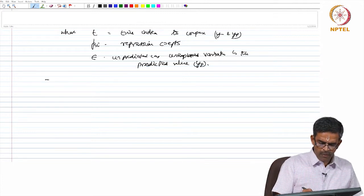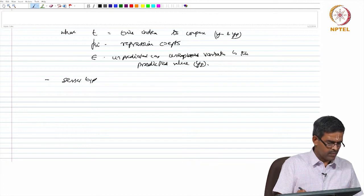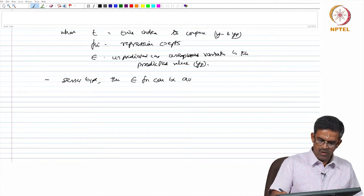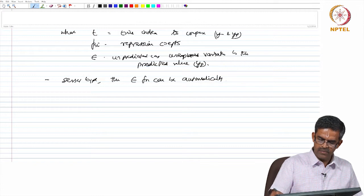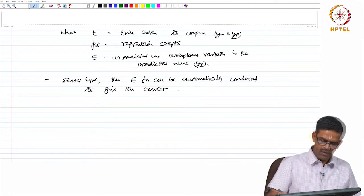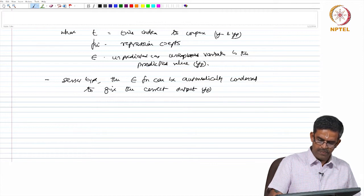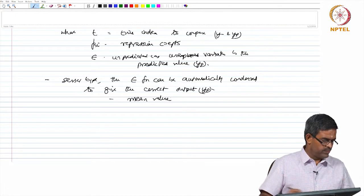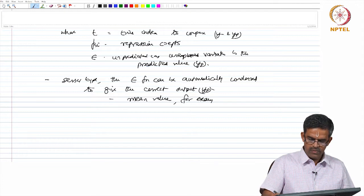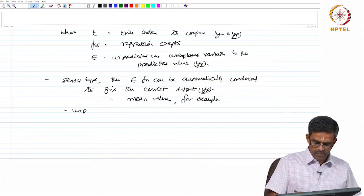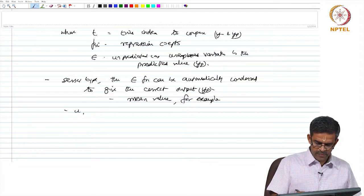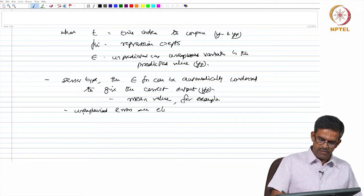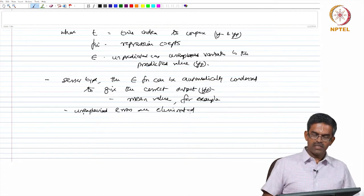Depending upon the sensor type, the error function can be automatically condensed. Output Yp can be, for example, a mean value. The unexplained errors are eliminated. This can be done by a simple microcontroller.